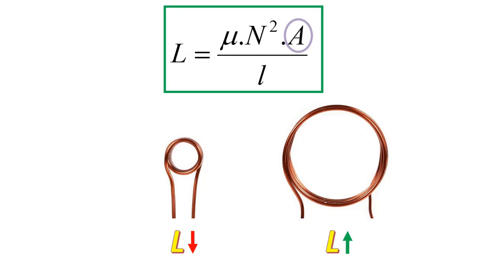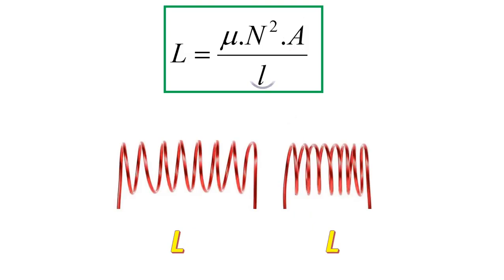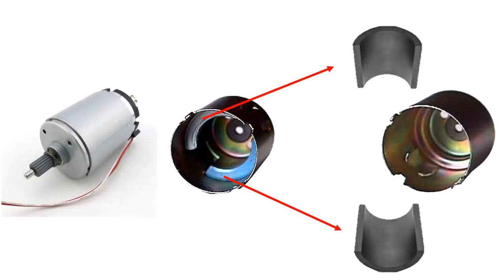Finally, let's have a look at how the inductance value with the length of the coil changes. When the length increases, the inductance value decreases, and when the length decreases, the inductance value increases.